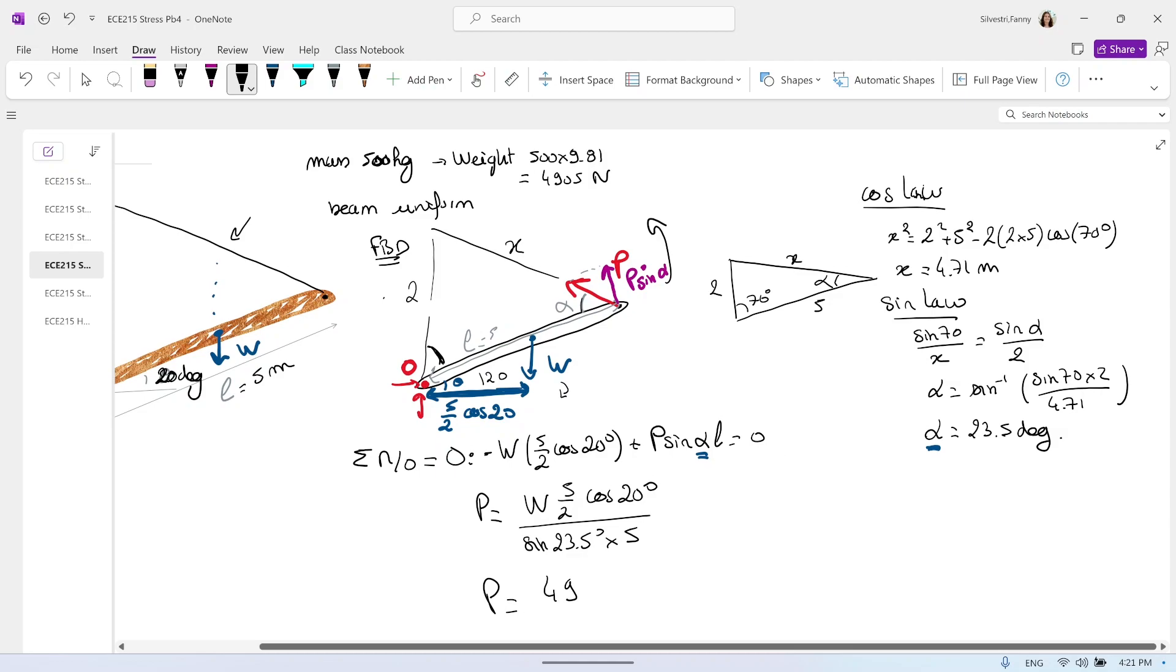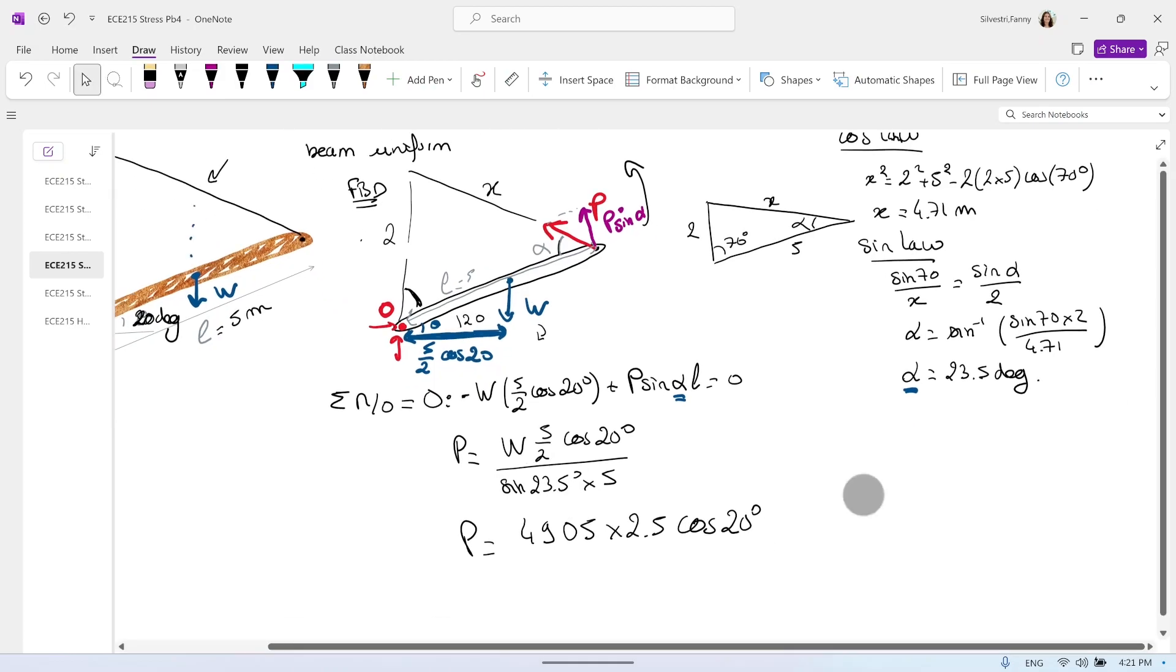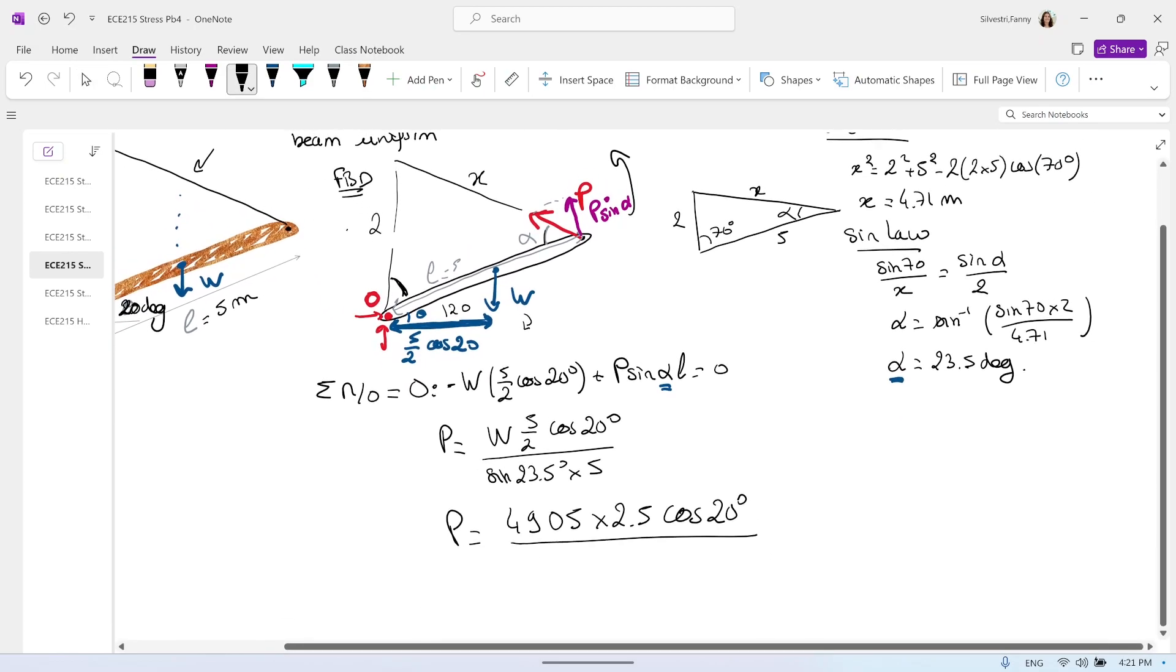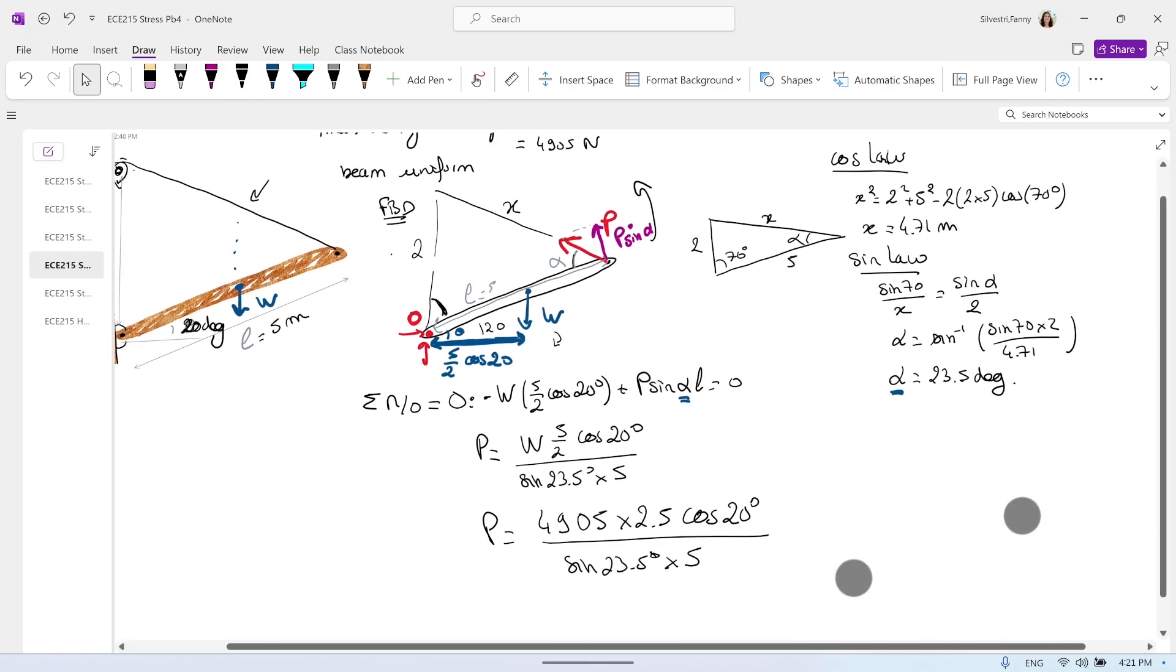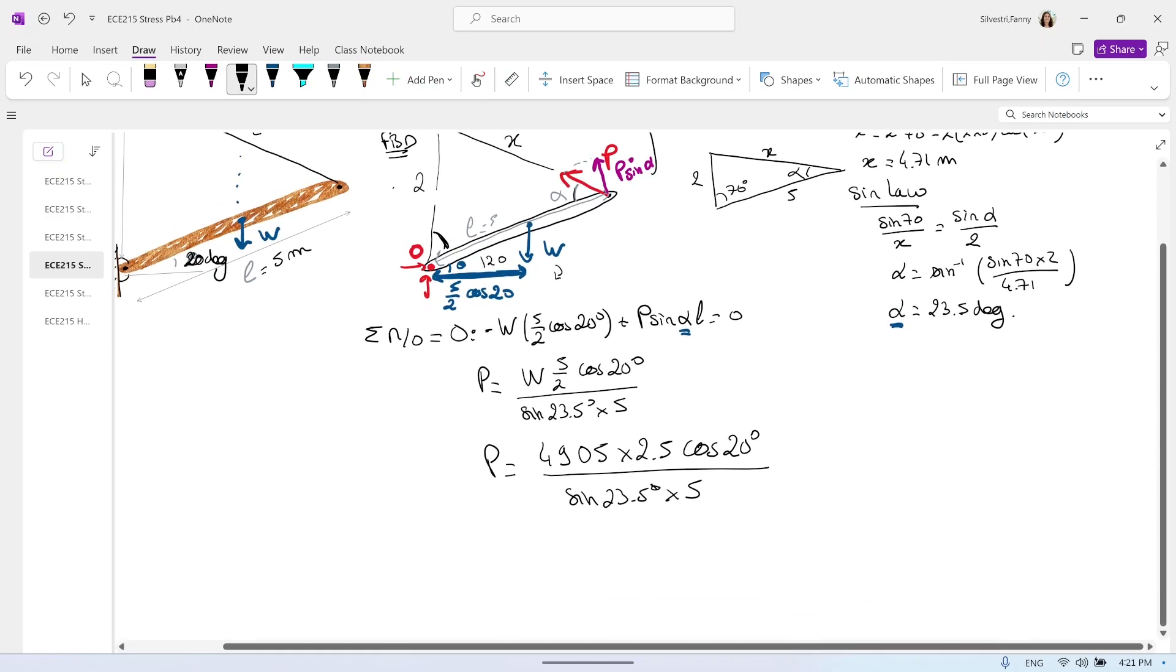4.905 times 2.5 times cosine 20 degrees. Divided by sine 23.5 degrees times 5. A good little review of statics problems with an equation of moment, right? We get P that is the force in the cable of 5,772 newton.